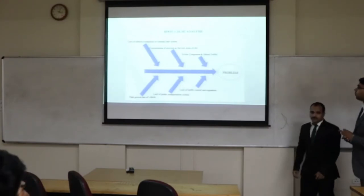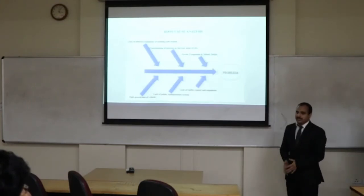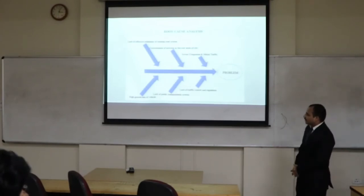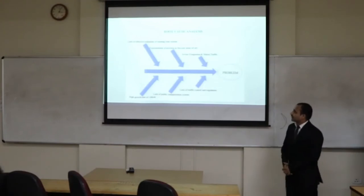There would be a main corridor and there would be a service ring around which different buses would be plying which would connect the main corridor with different stopages in the city. This is the root cause analysis. The problem is inefficient public transport system in Bhopal. The causes for it is severe congestion, improper lack of traffic control and regulation, high growth rate of vehicle and concentration of activities in the core areas of the city.